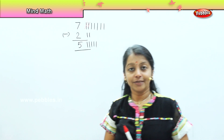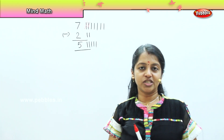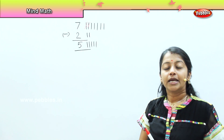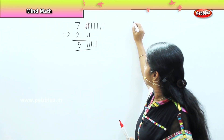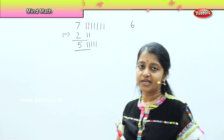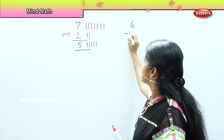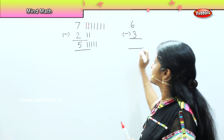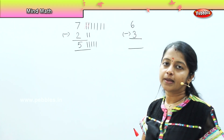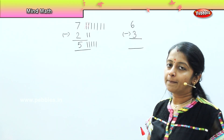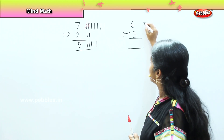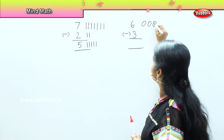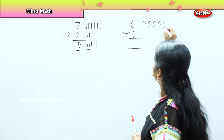Shall I ask you the next question? Money bought six eggs. While he was bringing the eggs, three eggs broke. So what is the balance of eggs which he has with him? Money was having six eggs.